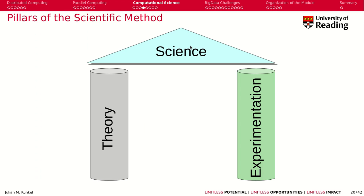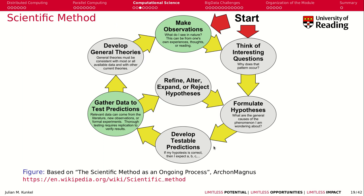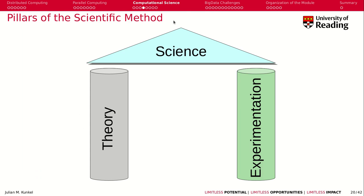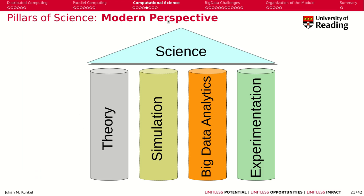So why is this interesting for us? Traditionally, the pillars of science have been theory and experimentation. The theory covers the conceptual framework, and experimentation is running the actual tests, gathering data for the test predictions, or making observations. Nowadays, in the modern world, we have computational science, which adds simulation as a pillar, and we have big data analytics, which is another pillar.